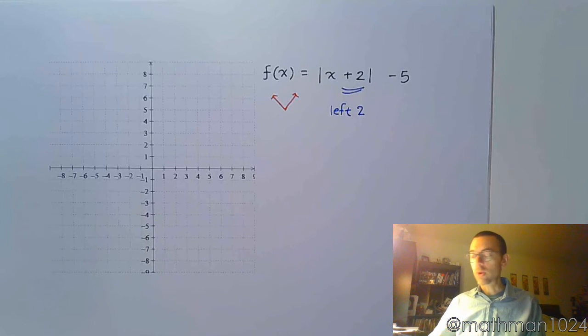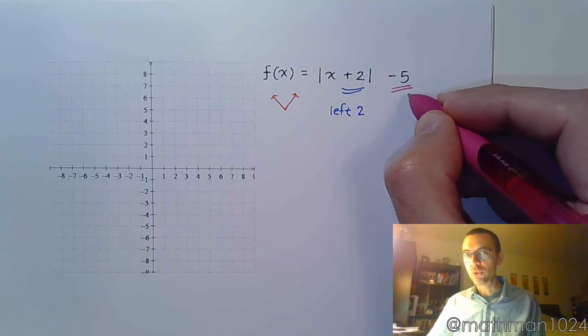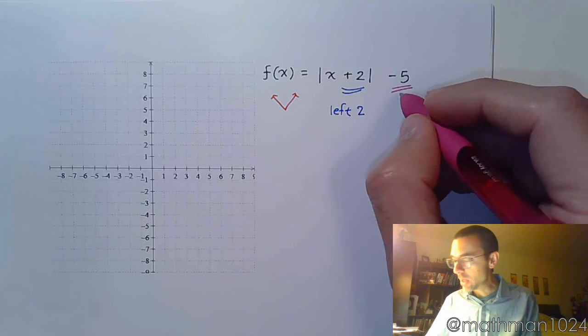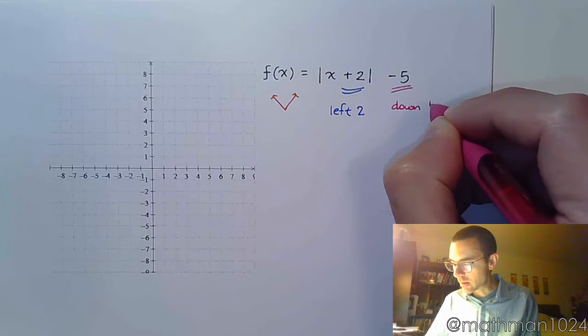And then over, outside of your function, I see a minus 5. I'm going to do a vertical shift, exactly what I see. So it means I see a minus 5, I'm going to go down 5.